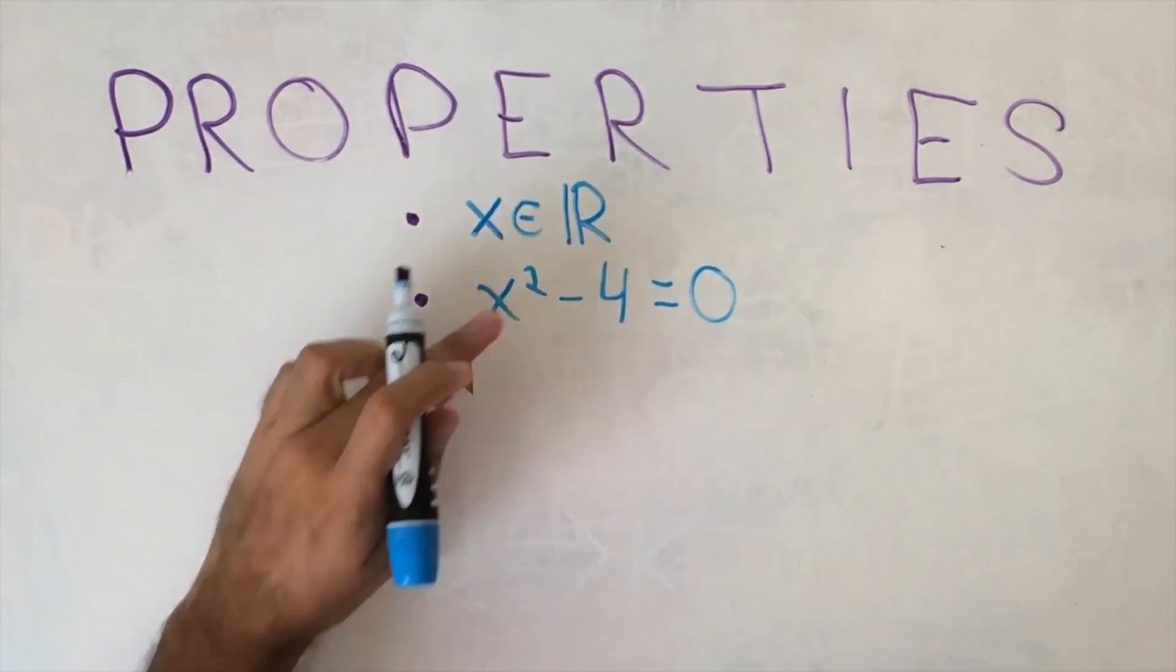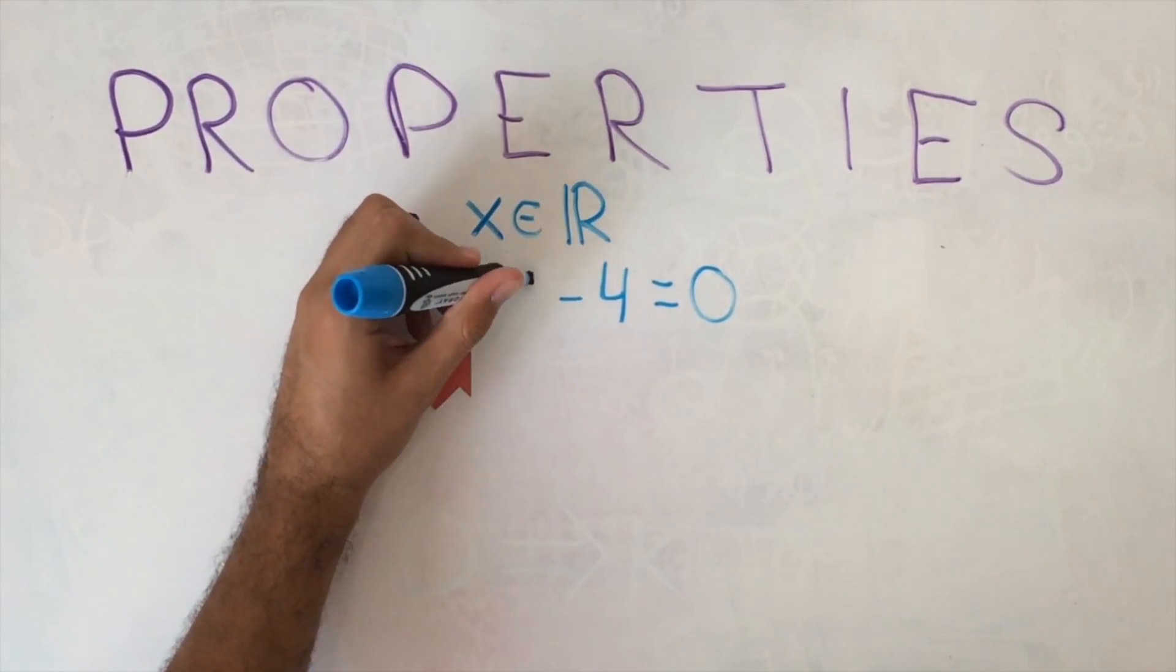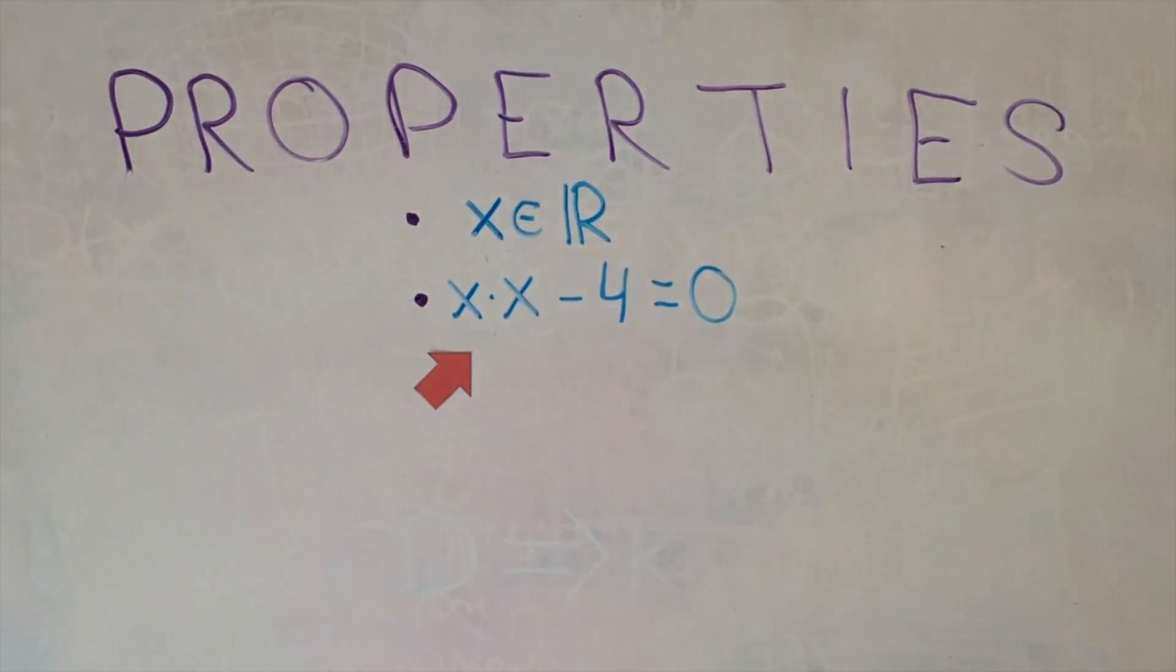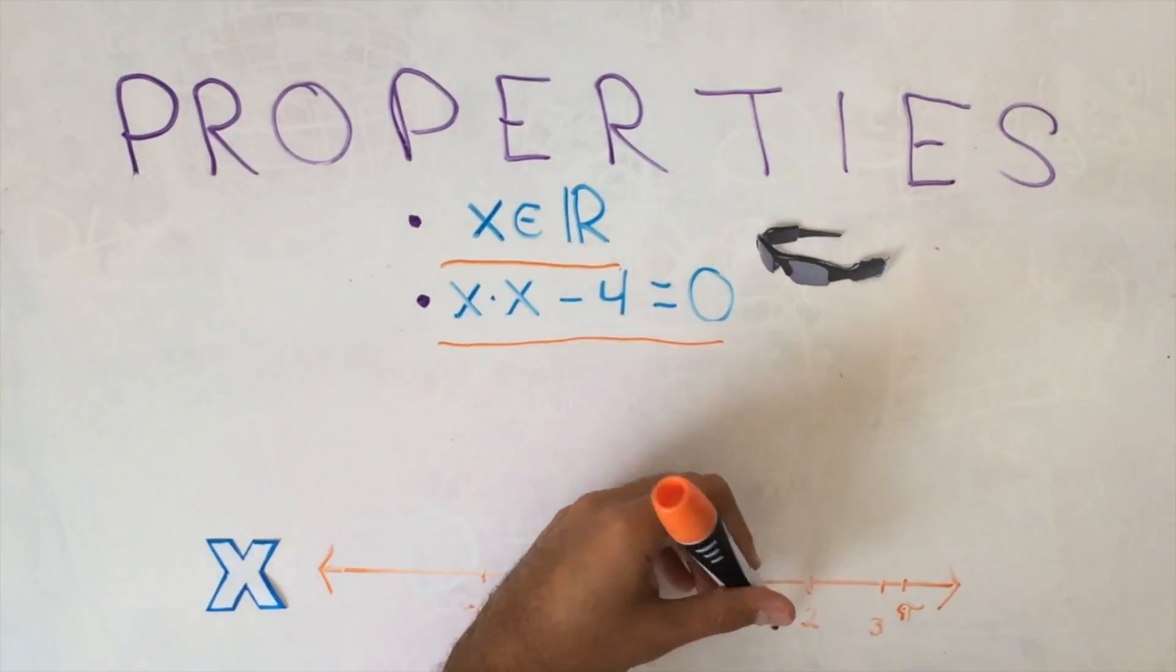X is a real number, and when you multiply X by itself and subtract 4 units from it, the resulting number after said operations is 0. Hence, your mission, should you choose to accept it, is to find out from these clues which real numbers satisfy this property.